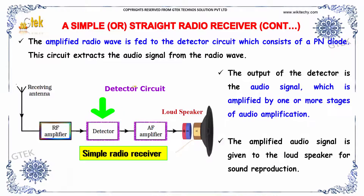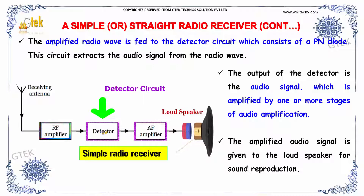The amplified radio wave is fed to the detector. The output of the detector is the audio signal, which is amplified by one or more stages of audio amplification. The amplified audio signal is given to the loudspeaker for sound reproduction.